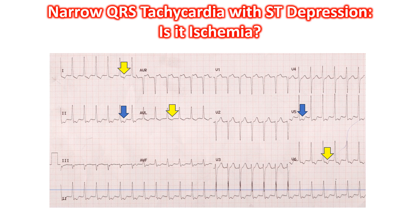These STT changes during tachycardia need not indicate associated coronary artery disease. It is quite common in supraventricular tachycardia even in young individuals. It could be a manifestation of a prominent TA wave, which is the atrial repolarization wave.